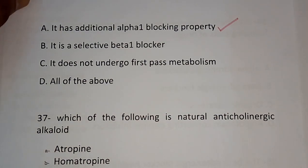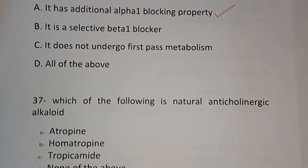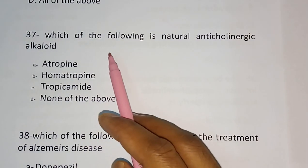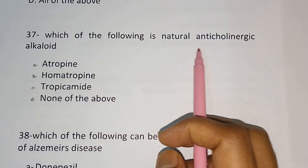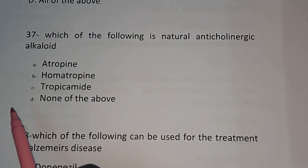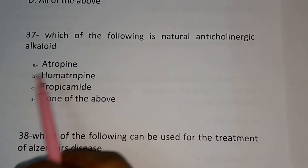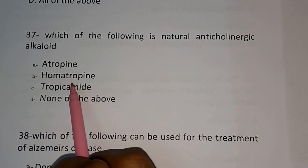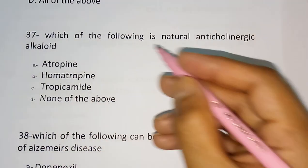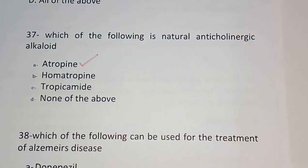Question number 37: Which of the following is a natural anticholinergic alkaloid? Options are: Atropine, Homatropine, Tropicamide, None of the above. The correct answer is: Atropine.